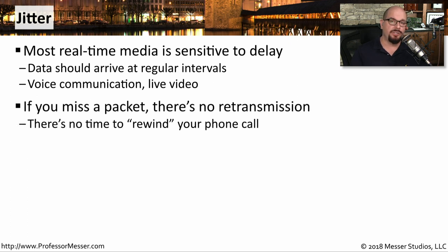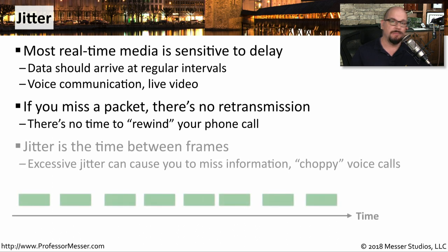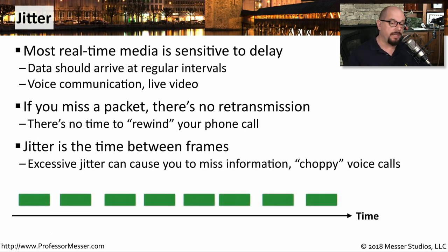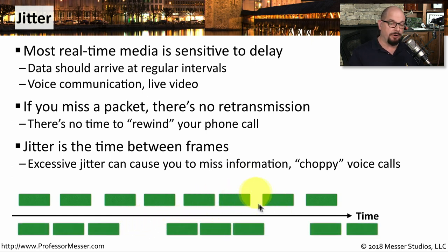It's these real-time applications that are so sensitive to any excessive jitter. If you're on a voice over IP phone call, you don't have time to have information retransmitted back to you. If you don't receive the information in time, it's dropped and you can't ever rewind the conversation to begin again. Jitter measurements are the time we'll see between frames. You should see a regular interval between each of the frames going across the network. If you start to have excessive jitter, you'll have choppy phone calls and you'll lose frames on your video.